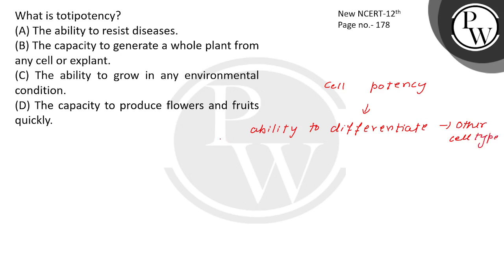Now you have different types of potency. You have totipotency, then you have pluripotency, multipotency, and unipotency. Now we are talking about pluripotency.